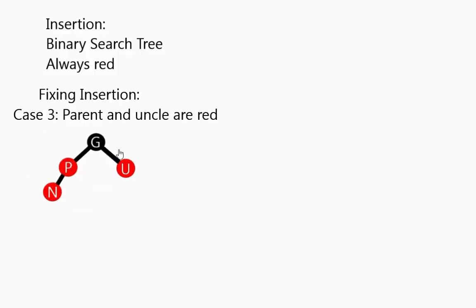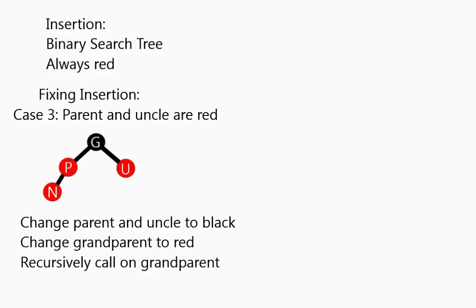Here's a more complicated case. Let's say both the parent and the uncle are red. So we have this red node we just inserted, the parent and uncle are red. So we change the parent and uncle to black, and the grandparent to red.